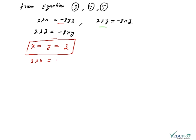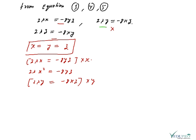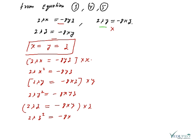From the three relations: 2λx = −8yz, 2λy = −8xz, and 2λz = −8xy. Multiplying the first relation by x: 2λx² = −8xyz (equation 6). Multiplying the second by y: 2λy² = −8xyz (equation 7). Multiplying the third by z: 2λz² = −8xyz (equation 8).